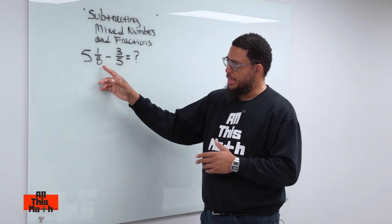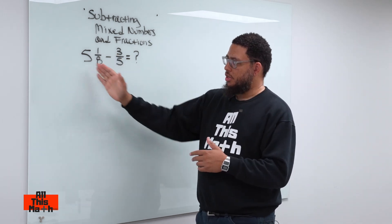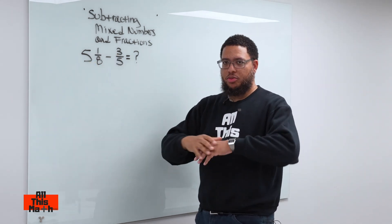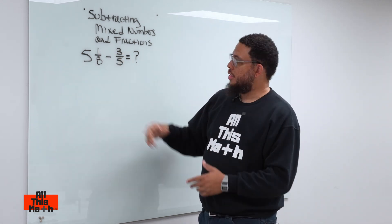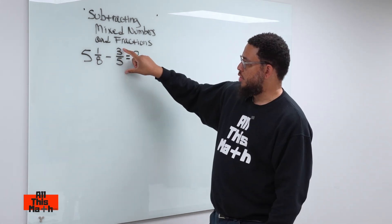Imagine a pizza cut up into eight slices, you have one slice. So, maybe you ordered five pizzas, you had a party—five whole pizzas, and then 1/8 of another pizza. Then, over here, we're trying to subtract 3/5 from that.